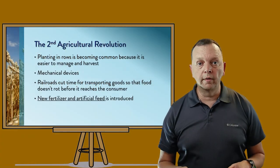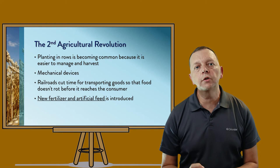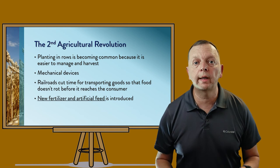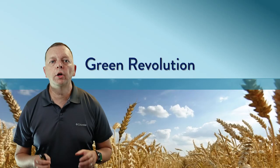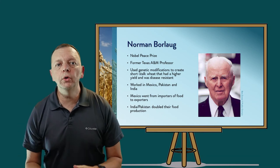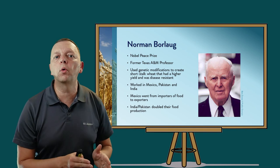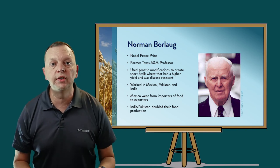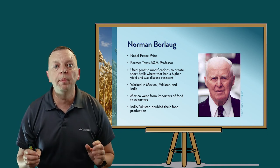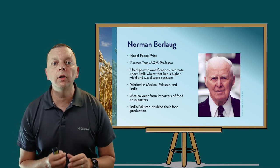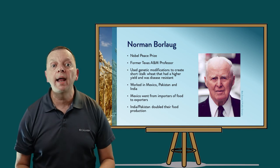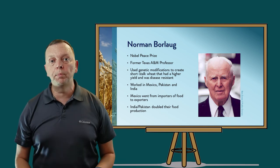At the end of the Industrial Revolution, we started having advances in chemicals, which meant for agriculture we had new fertilizers and artificial feed. The next big revolution in agriculture was the Green Revolution, which was largely started by Norman Borlaug. Using genetic modifications, he created short-stock wheat that had higher yields and was disease-resistant. He worked in several different countries, including Mexico, Pakistan, and India. Because of his genetically modified wheat, countries such as Mexico went from being net importers of food to exporters. And in India and Pakistan, they were able to double their food production very quickly.